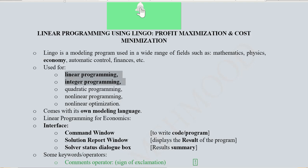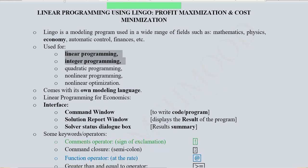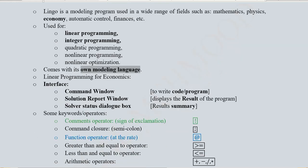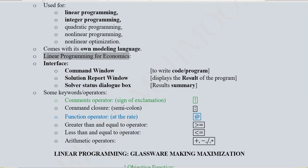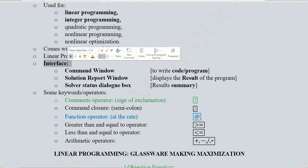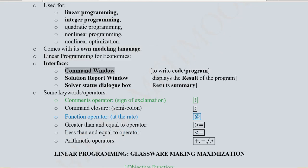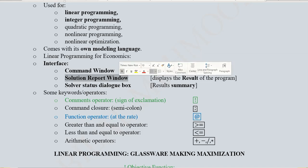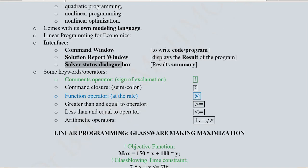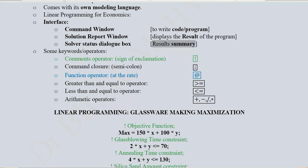LINGO has its own modeling language that we will see in a few moments, and our focus is on linear programming for economics or at most integer programming. Regarding the interface of the software, it has a command window where we can write the code, a solution report window where the result is displayed, and a solver status dialog box which gives a summary of the results.